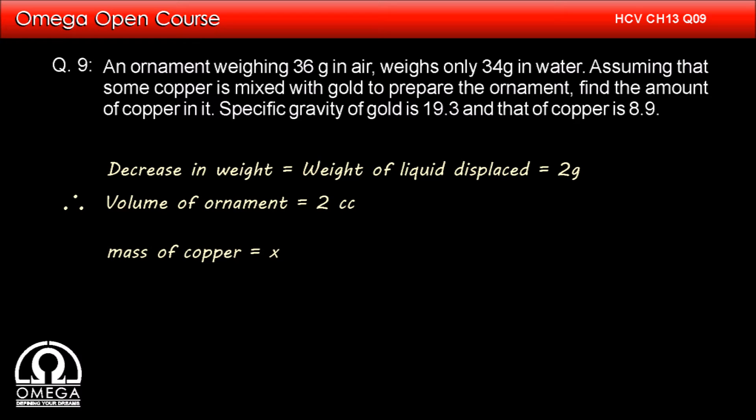Let the mass of the copper in the ornament be x. Then the mass of the gold in the ornament will be 36 minus x. Now the volume of the ornament that is 2 cc must be equal to the volume of the copper in the ornament plus the volume of the gold in the ornament.